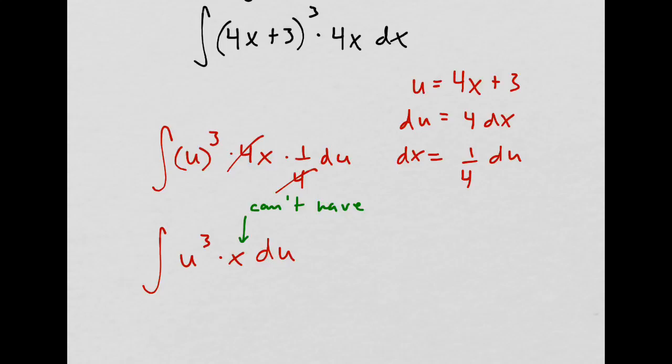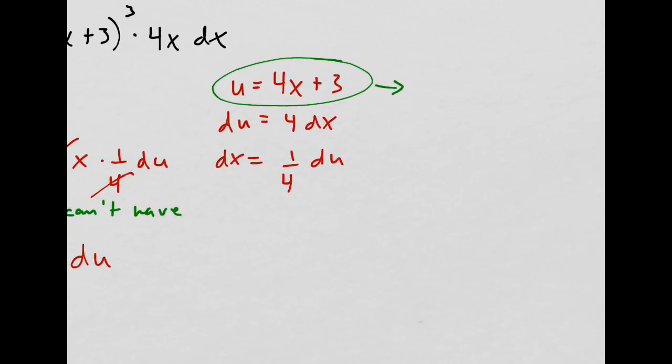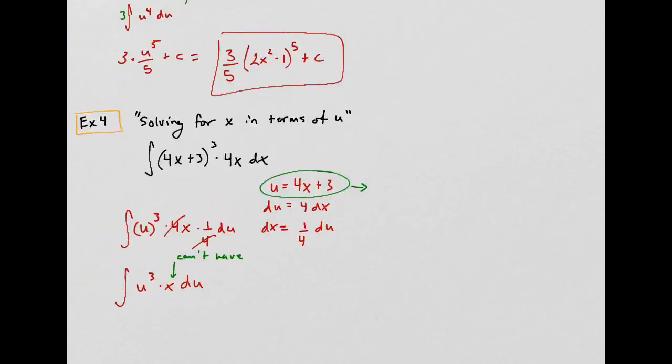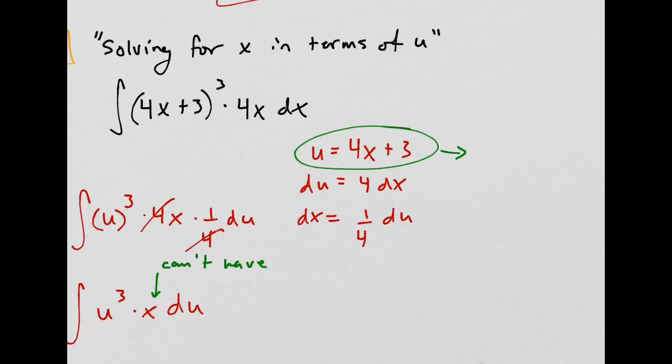So when you get stuck like this, when you have a mixture, you go back to your u equation. Watch this. This is, what does it say to do? Solve for x in terms of u. So what does that mean? That means get x by itself.